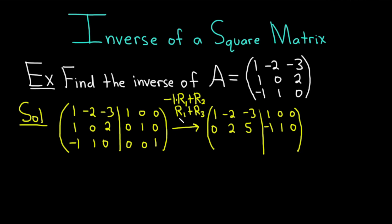For the last row, we just add row 1 to row 3. 1 plus negative 1 is 0 — that gives us the first column. Negative 2 plus 1 is negative 1. Negative 3 plus 0 is negative 3. 1 plus 0 is 1. 0 plus 0 is 0. 0 plus 1 is 1. That's a lot of mental computations — lots of brain power!